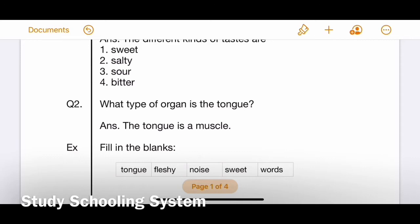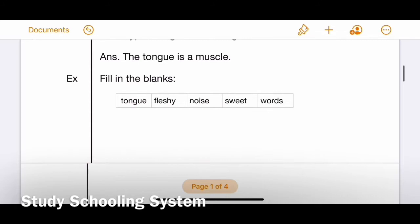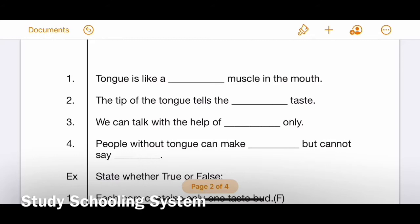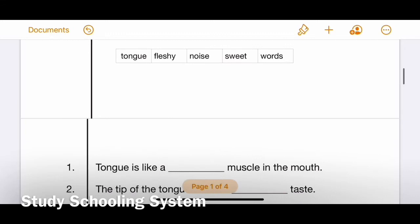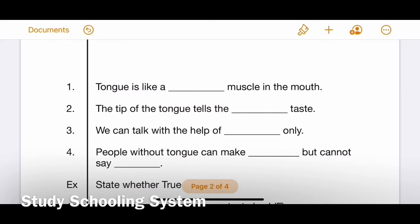Now let's move on to exercise fill in the blanks. In your hint box, five words are given: number one tongue, two fleshy, three noise, four sweet, five words. Now let's see what the blanks are. Number one: tongue is like a dash muscle in the mouth. Number two: the tip of the tongue tells the dash taste. This is in your diagram.